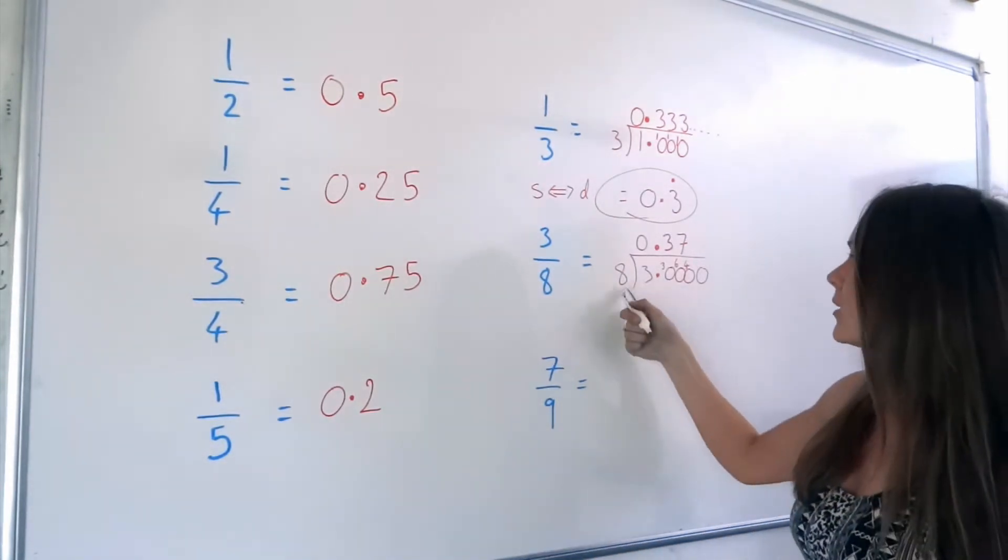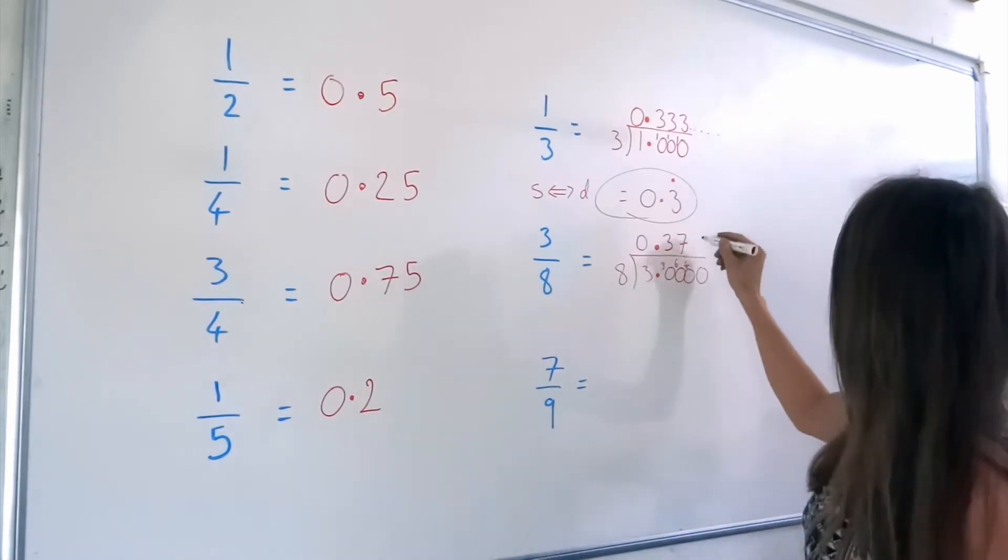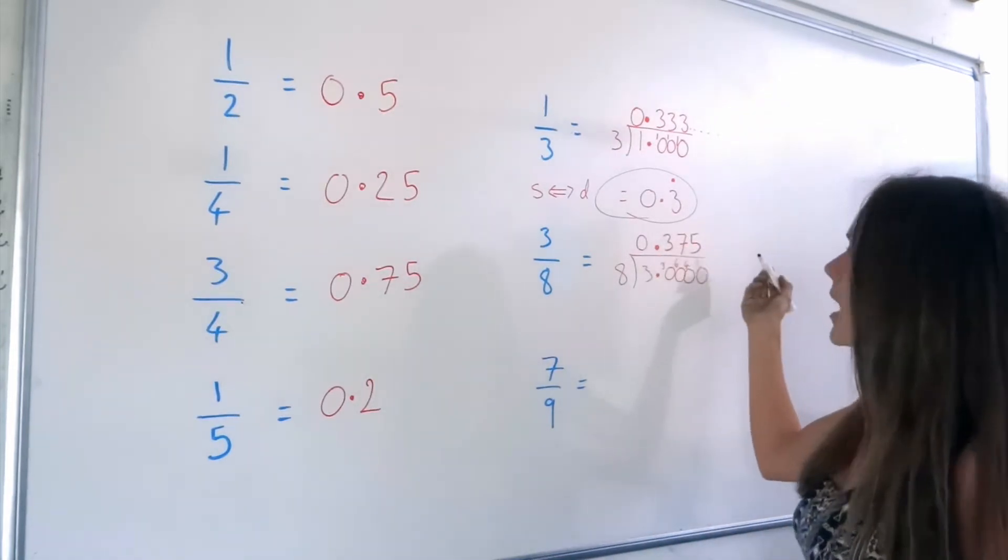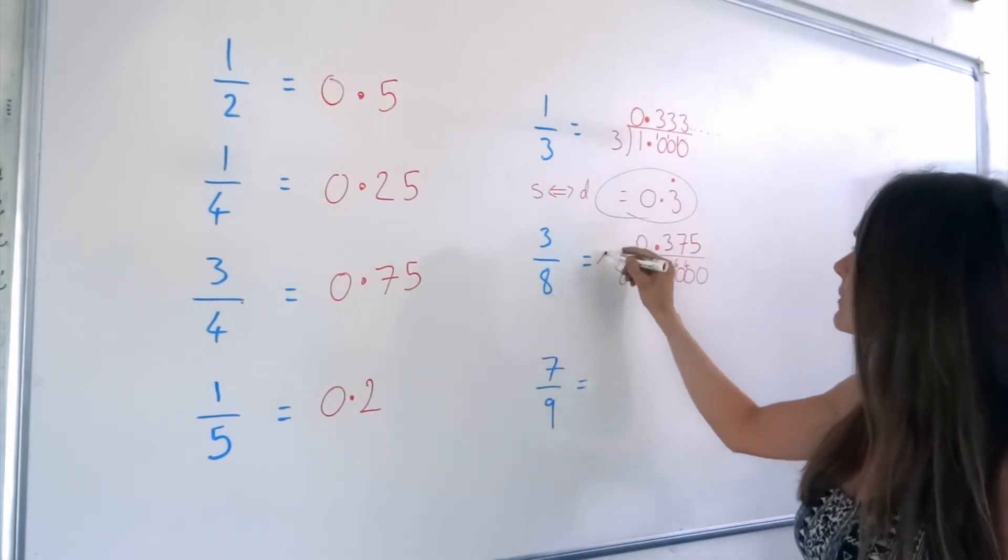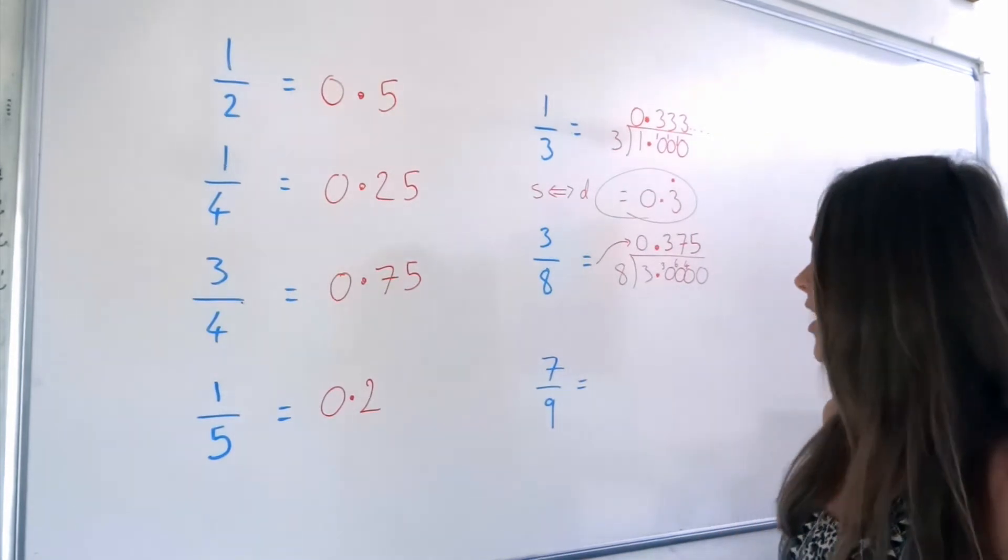So the next one. How many 8's in 40? Well, this time it goes exactly. So it's just 5. And we've got our final answer. So there we go. There's 3/8 as a decimal. 0.375.